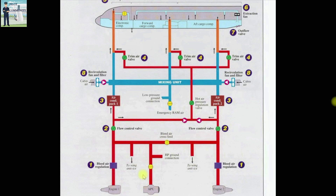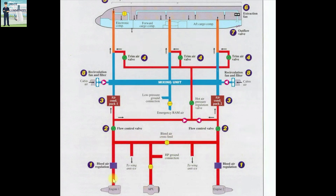Even if the aircraft engines are running and APU bleed is on, the APU bleed will have priority over the engine bleed. However, one important thing to note: if the cross bleed valve is closed, the bleed from engine number two will still supply air. Now let us see what happens to this hot air from the bleed of the engines and how it is brought down to a comfortable temperature.